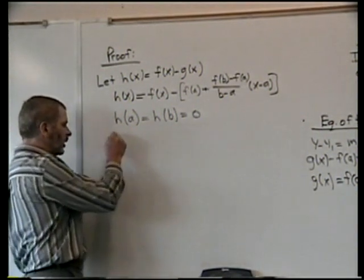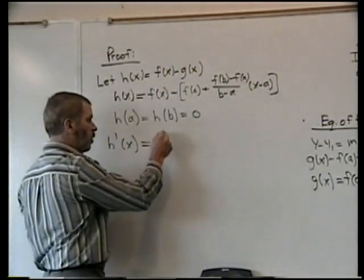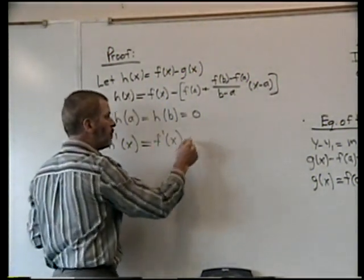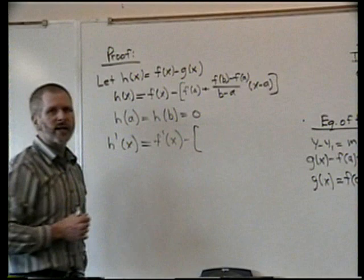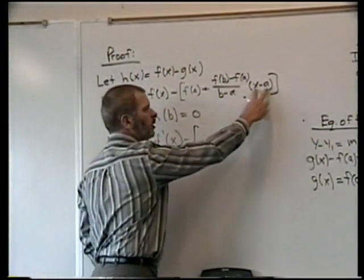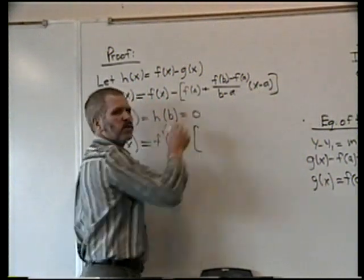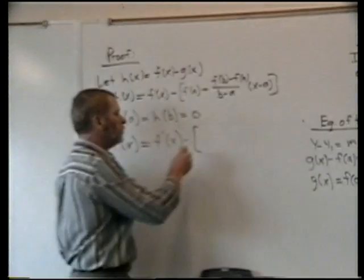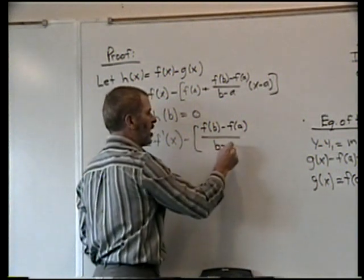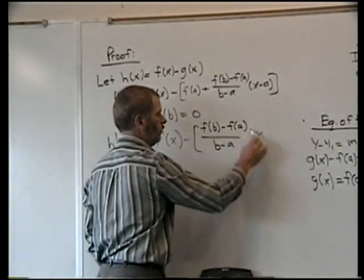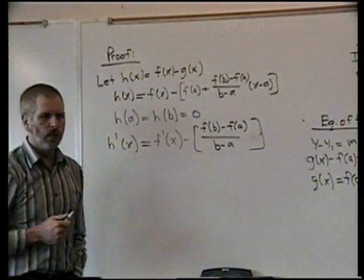h' would be f'(x) minus - if I take the derivative here, the only part of that expression that contains an x is right here. The derivative of x is one, so the derivative of this piece is one. f(a) is just a constant, so its derivative is zero. This would become [f(b) - f(a)] / (b - a). And so there is my h' function.